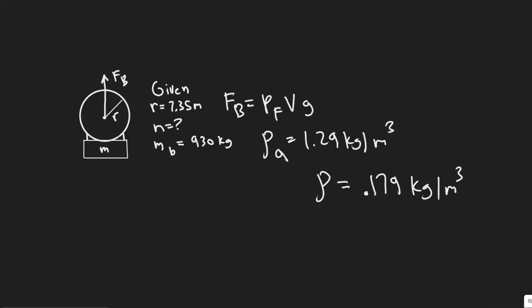In this problem, we are told a spherical balloon has a radius of 7.35 meters and is filled with helium. How large a cargo can it lift, assuming that the skin and structure of the balloon have a mass of 930 kilograms? Neglect the buoyant force on the cargo volume itself.